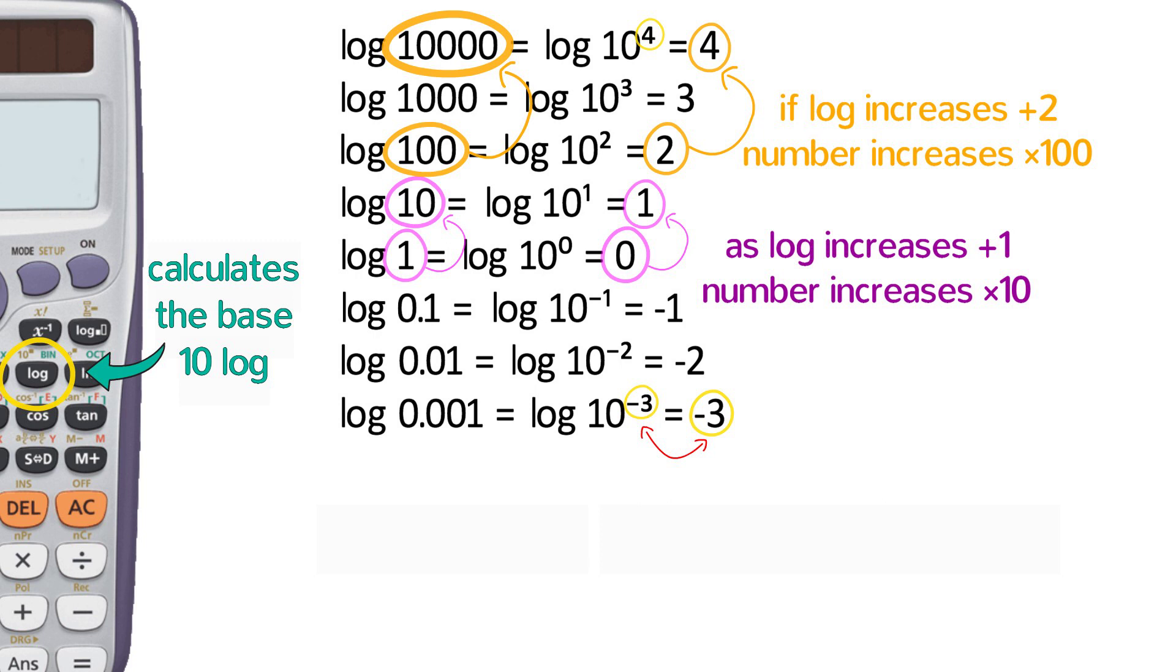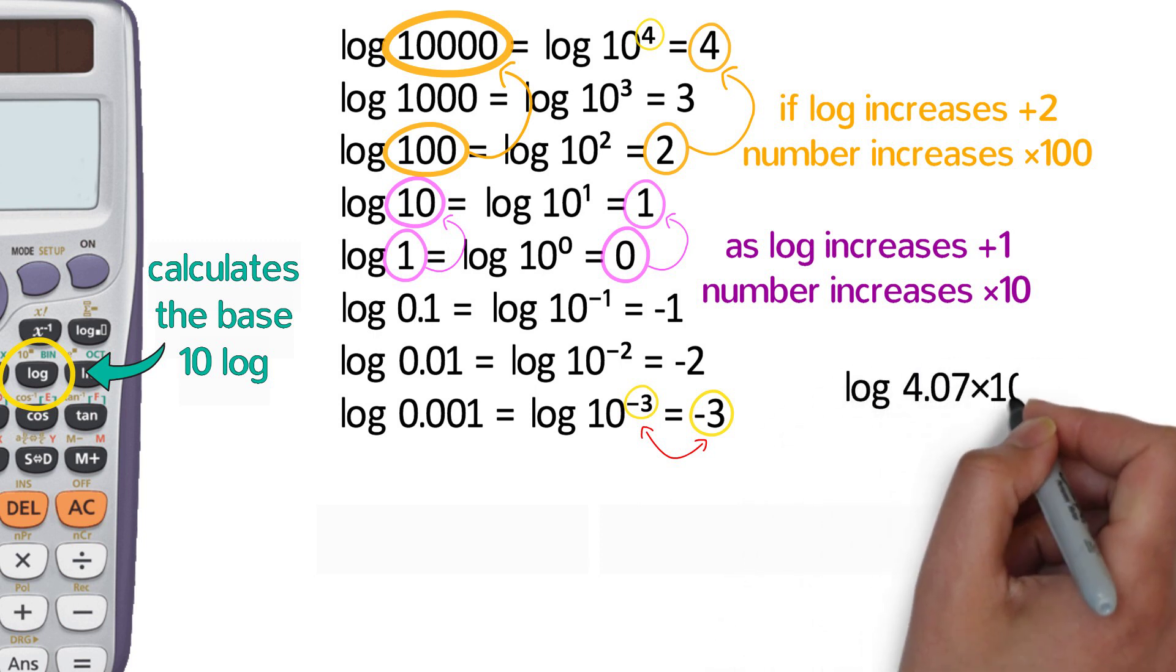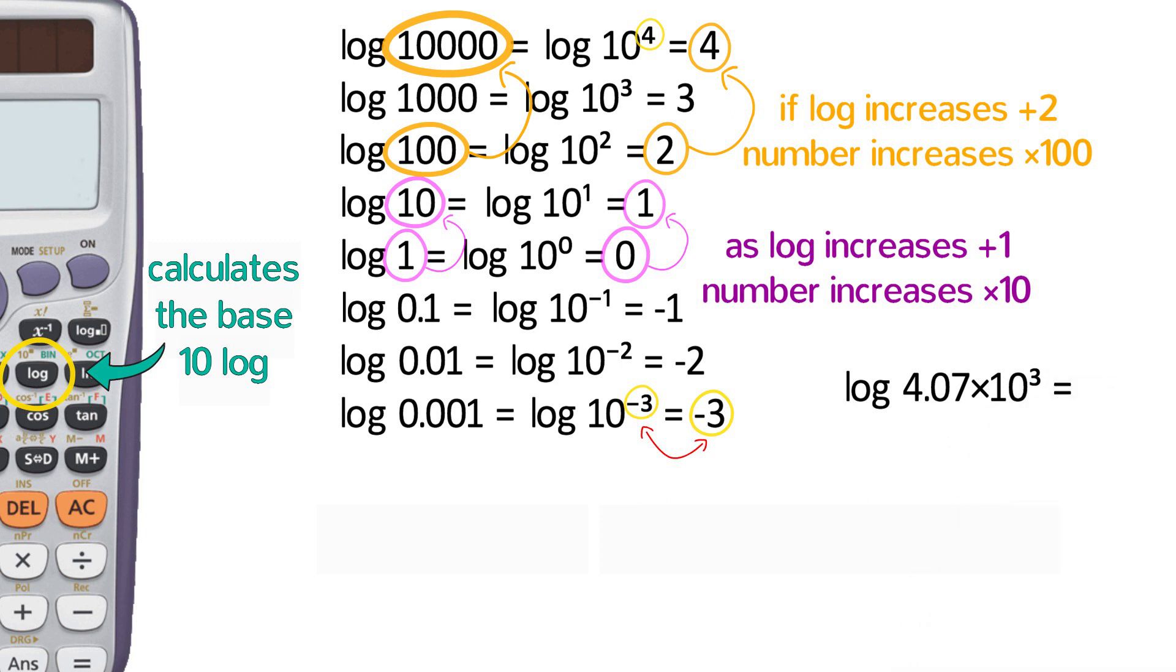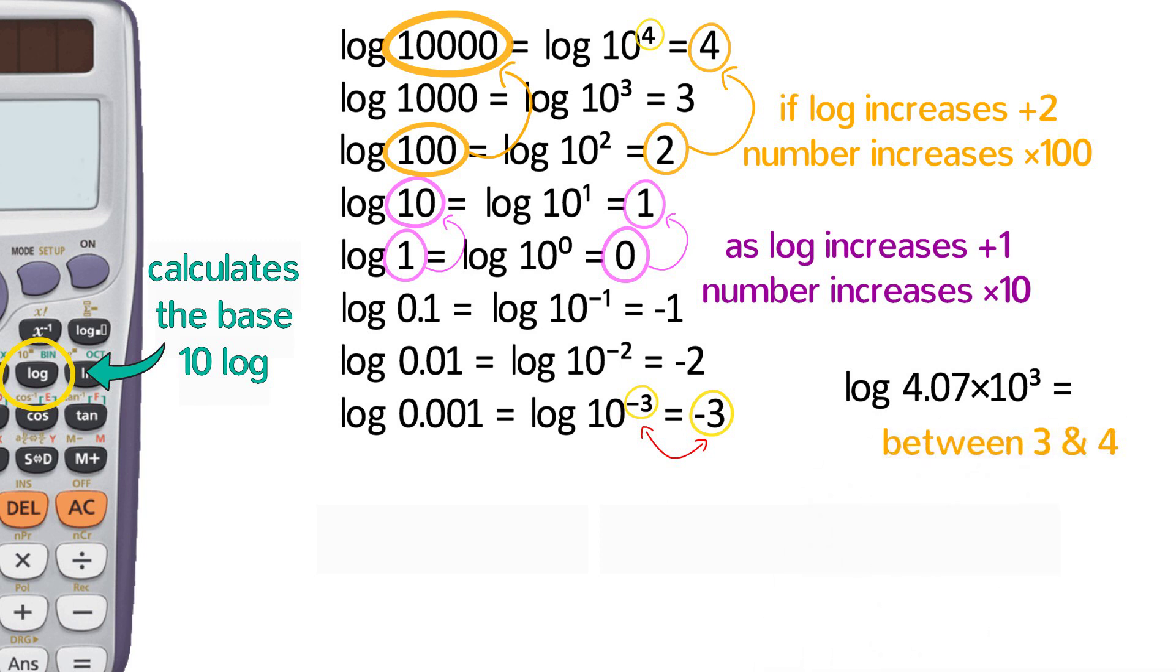But what if we wanted to know the log of something like 4.07 times 10 to the third? How do we solve that? Although we can't solve that mentally, we can estimate that the log will be between 3 and 4 because the number is larger than 10 to the third, but smaller than 10 to the fourth.